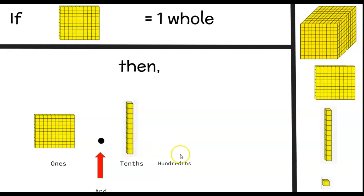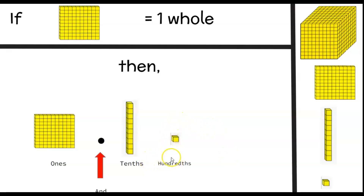Then you would ask yourself, what would I use for the hundredths place? If I divide the hundredths flat by 100, that gives me one. So I would use my ones cube to represent the hundredths place. You can also think about it as: the hundredths place is ten times smaller than the tenths place. So in the tenths place I have the ten stick, and ten divided by ten is one.